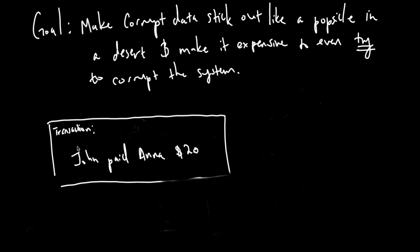So here we have a transaction and it's disputed. John paid Anna $20, but there are disagreements around how much John actually paid Anna. I'll introduce the idea of hashing that will give light to how we might accomplish this goal.